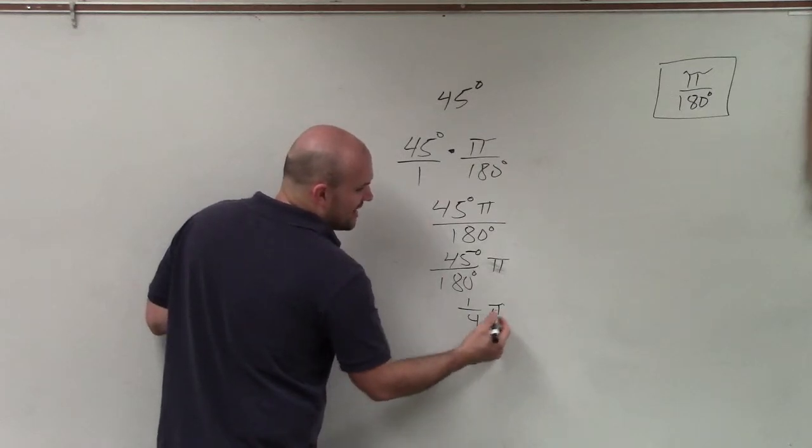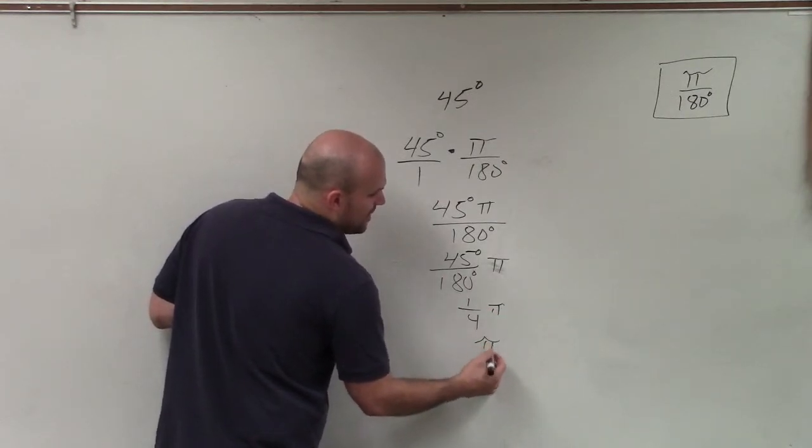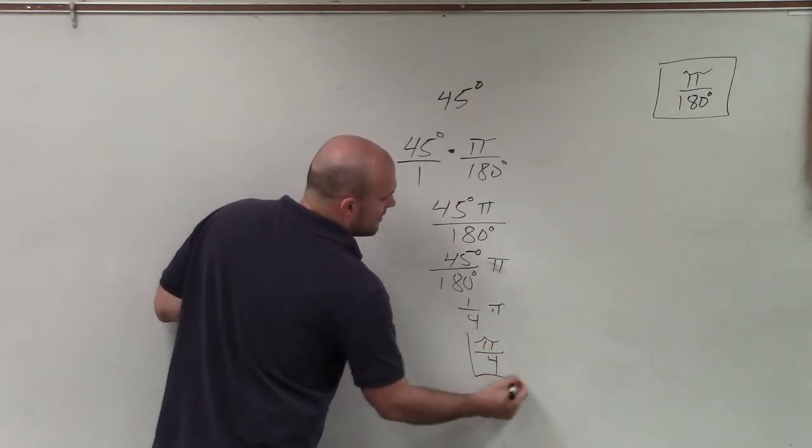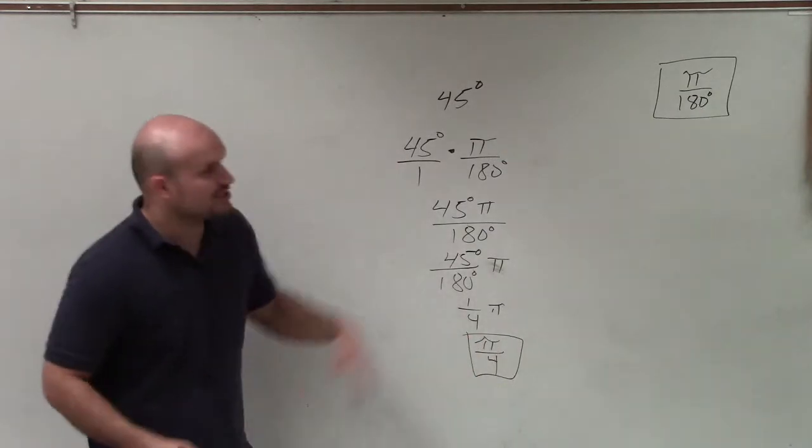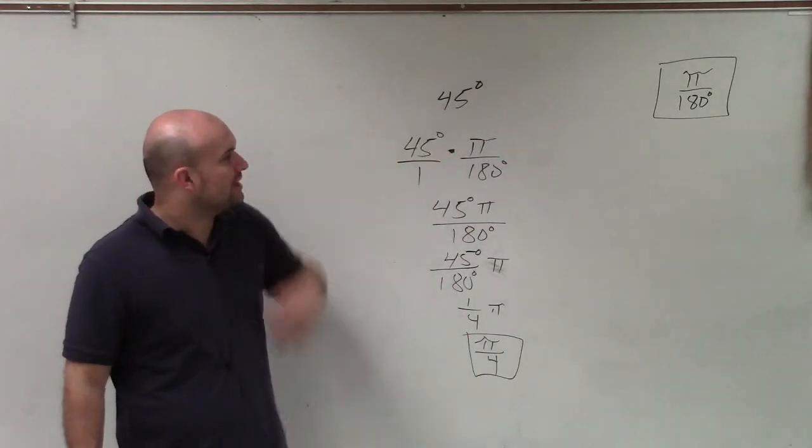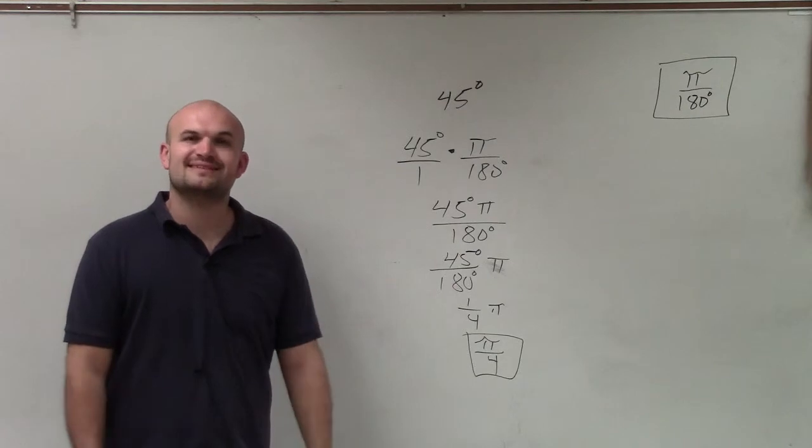But we usually rewrite this as pi times 1. So it'd be pi over 4. And that's going to be your radian measure when converted from degrees. Thanks.